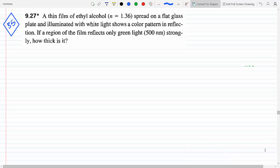Okay, so this is problem 9.27 in the 4th edition, 9.35 in the 5th edition if you see that blue number on the left. The problem states: a thin film of ethyl alcohol, n equals 1.36, spread on a flat glass plate illuminated with white light shows a color pattern in reflection.